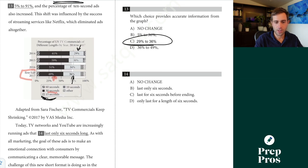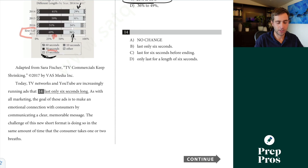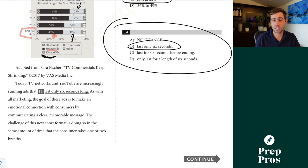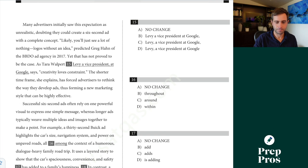So once again, I'll skim through the other parts as I'm kind of reading through. Today TV networks and YouTube are increasingly running ads that last only six seconds long. Well, all of these are wordiness redundancy questions I can tell by the pattern of the answer choice here. So now I just need to think about am I being redundant or am I being excessively wordy? So are increasingly running ads that last only six seconds long? Well, last only six seconds is the exact same idea. It's just more concise. So B is going to be our correct answer. All these other ones just wordier way of expressing the same idea.